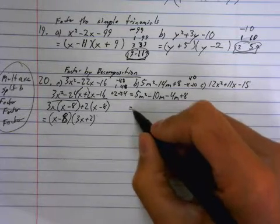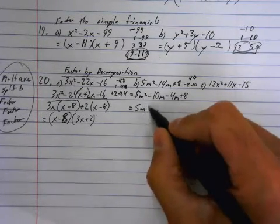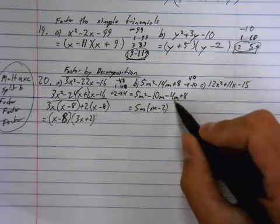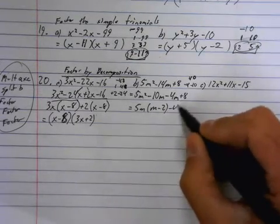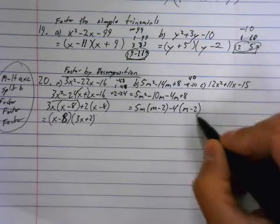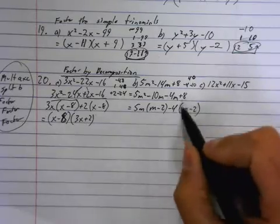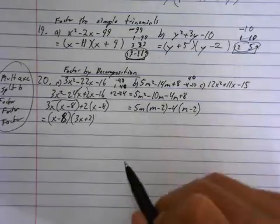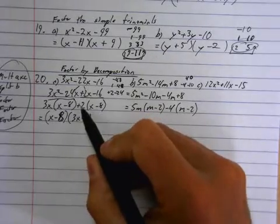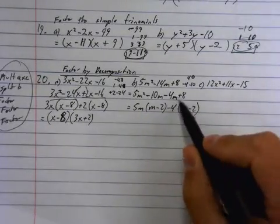Now, I'm going to factor out of the first two. I'm taking a 5m, leaving me with m minus 2. Now, the next two, I've got to take out a negative here. So, I'm going to take a negative 4, because then it's going to leave me with m minus 2. So, when I divide out of these things, if it starts with a negative, take out a negative. So, here, that 2 started with a positive, so just take out a positive. But here, the pair starts with a negative, so take out a negative.